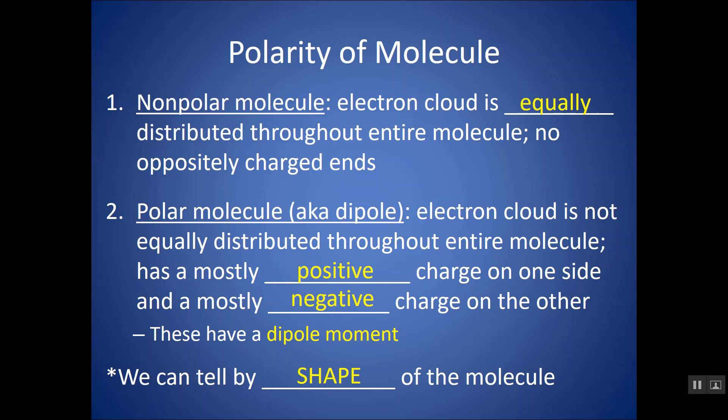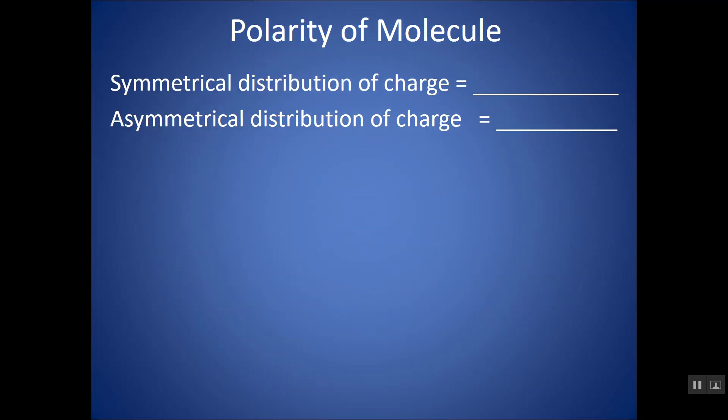We can tell by the shape of the molecule. It's going to come back down to figuring out the number of electron domains and looking at the molecular geometry. That shape is going to tell us whether something's polar or non-polar. Anytime you have a symmetrical distribution of charge, if your molecule looks symmetrical, it's going to be non-polar. Anytime you have an asymmetrical distribution of charge, your structure is asymmetrical, you are going to have a polar molecule.